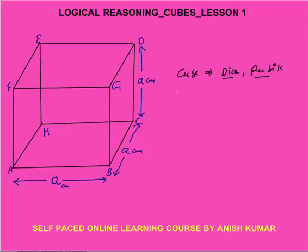Now a cube has 8 corners. You can see that the 8 corners are labelled A, B, C, D up to H — we have 8 corners.